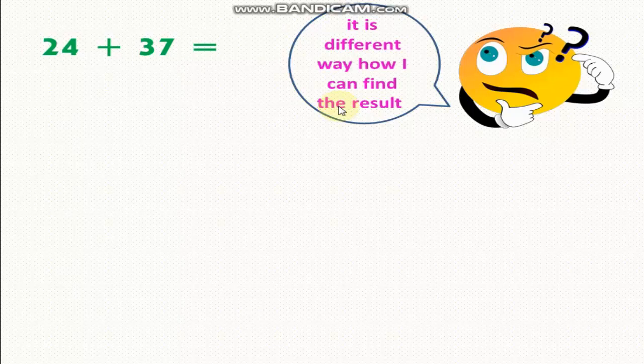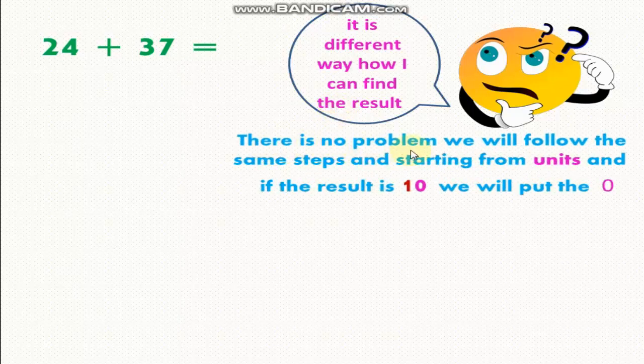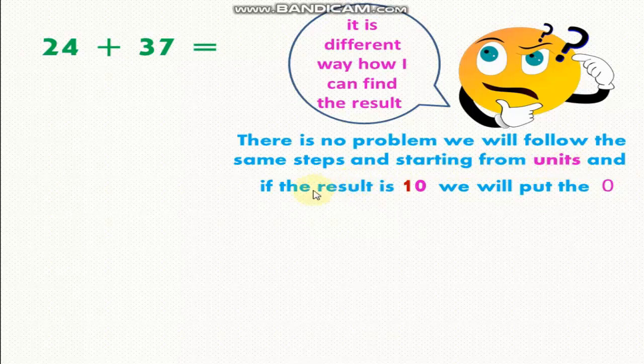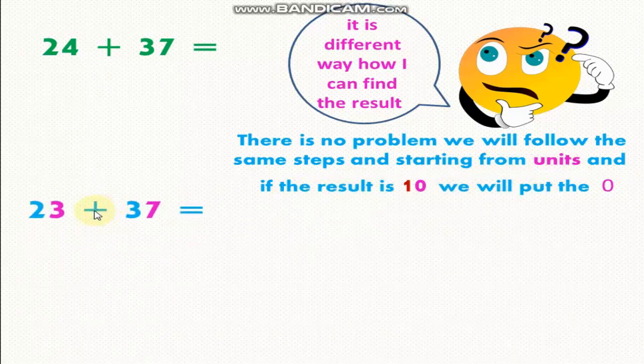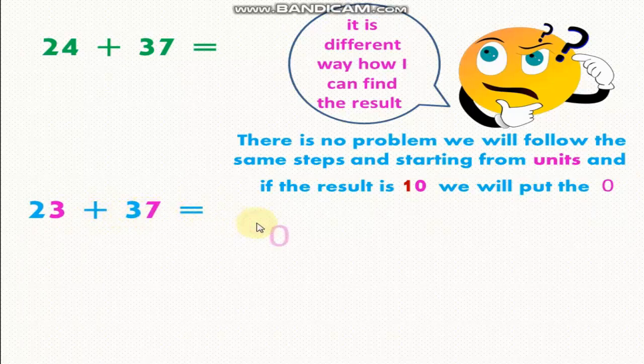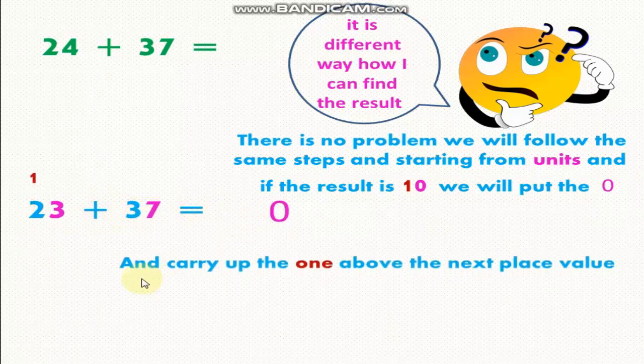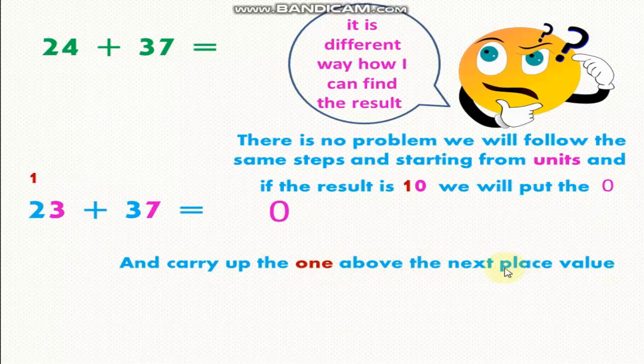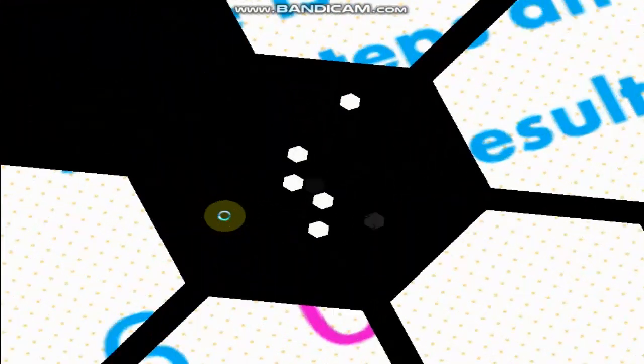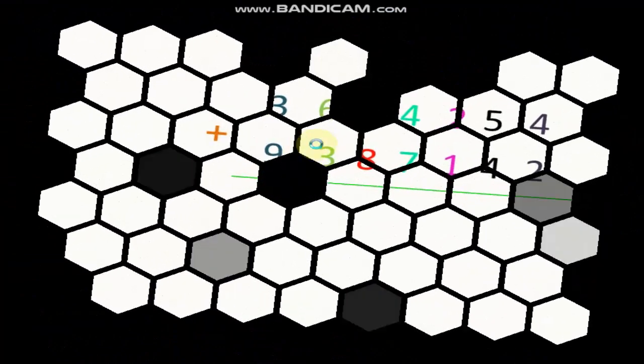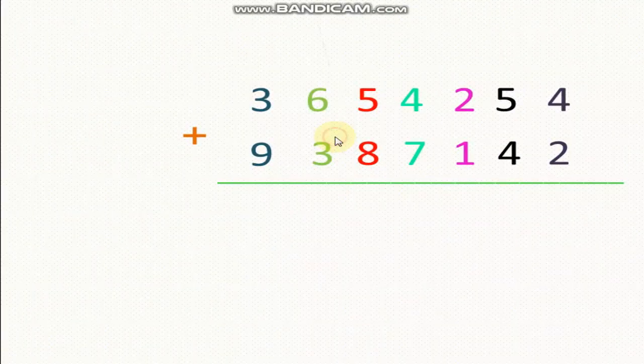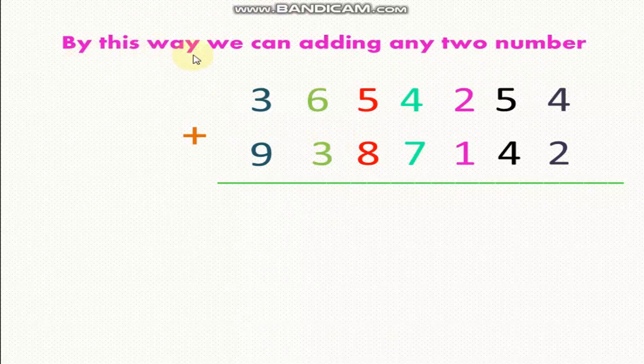It's a different way how I can find the result. There is no problem. We will follow the same steps and start from units, and if the result is 10 we will put the 0. 3 plus 7 equals 10. Write 0 and carry up 1 above the next place value. 1 plus 2 equals 3. 3 plus 3 equals 6.